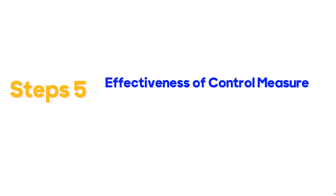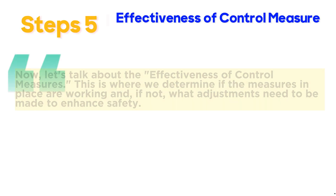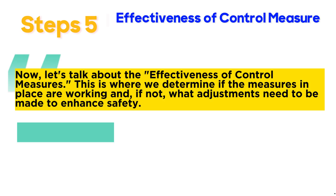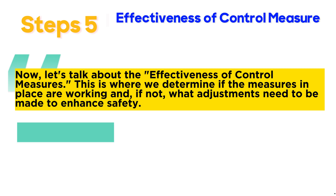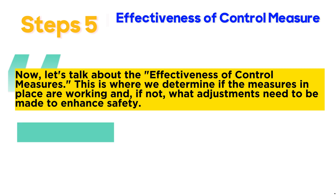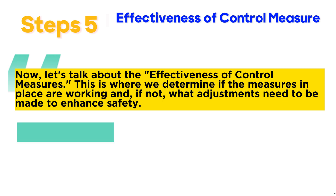Step 5: Effectiveness of control measures. Now let's talk about the effectiveness of control measures. This is where we determine if the measures in place are working and, if not, what adjustments need to be made to enhance safety.